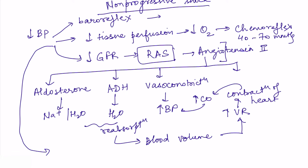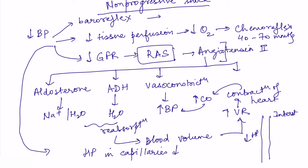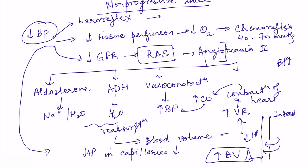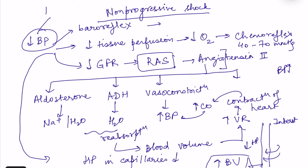Whenever blood pressure decreases, the hydrostatic pressure in capillaries also decreases. Based on Starling's forces, when hydrostatic pressure decreases in capillaries, water tends to move into the capillaries, increasing blood volume. Additionally, there is something known as stress relaxation — when blood pressure decreases, there is reverse stress relaxation of vessels, which is another compensatory mechanism.